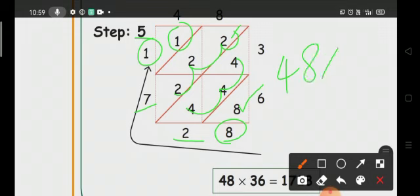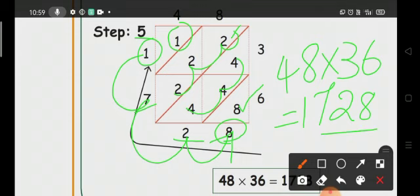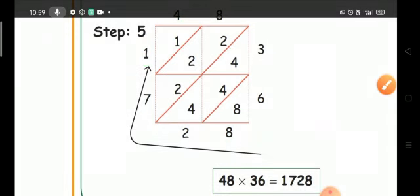48 times 36, the answer is 1, 7, 2, 8. This way we write it: 1728. This is the lattice method.